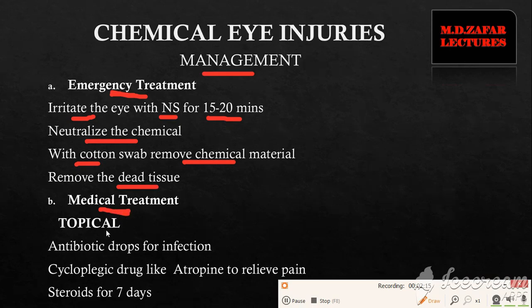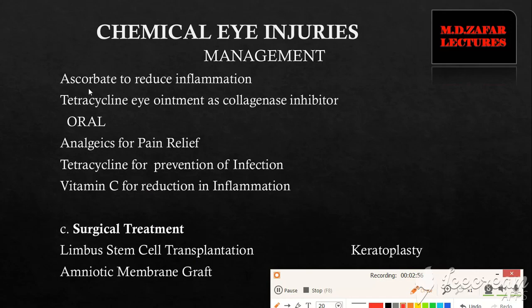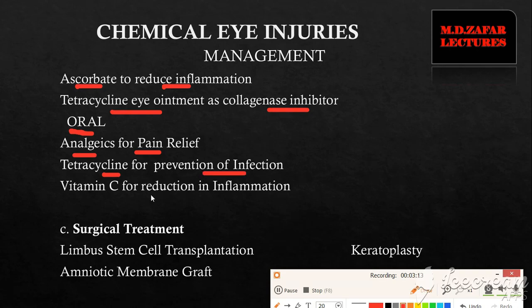In the medical treatment, which is both topical and oral: topical treatment includes antibiotic drops for infection, cycloplegic drugs like atropine which relieve pain, and steroids for seven days after which NSAIDs can be used. We can also give ascorbate to reduce inflammation and tetracycline eye ointment as a collagenase inhibitor. For oral medications, we give analgesics for pain relief, tetracycline for prevention of infection, and vitamin C for reduction of inflammation.